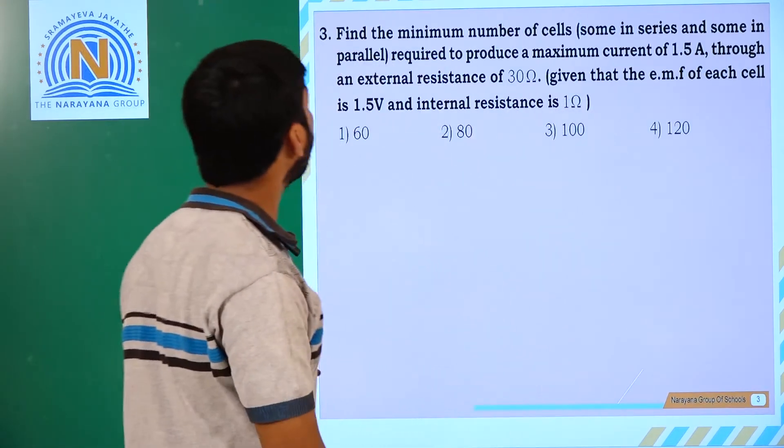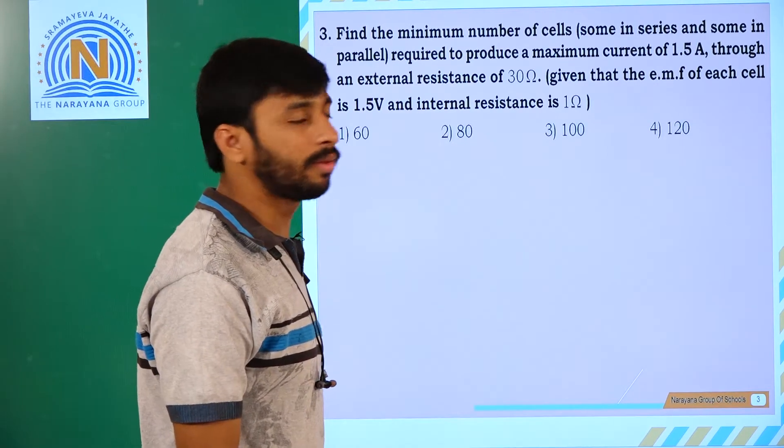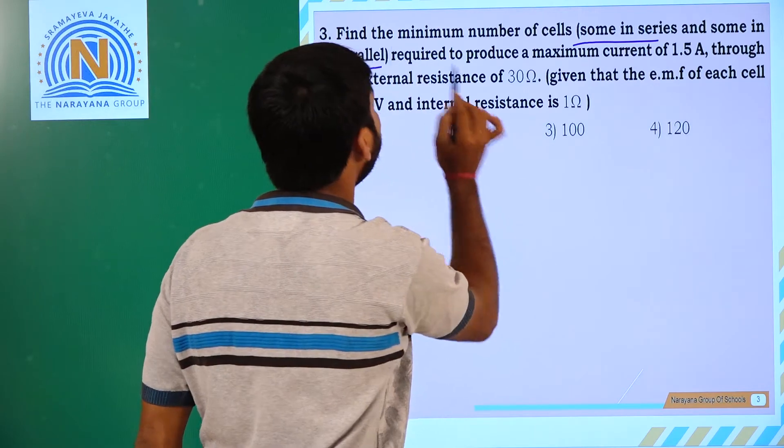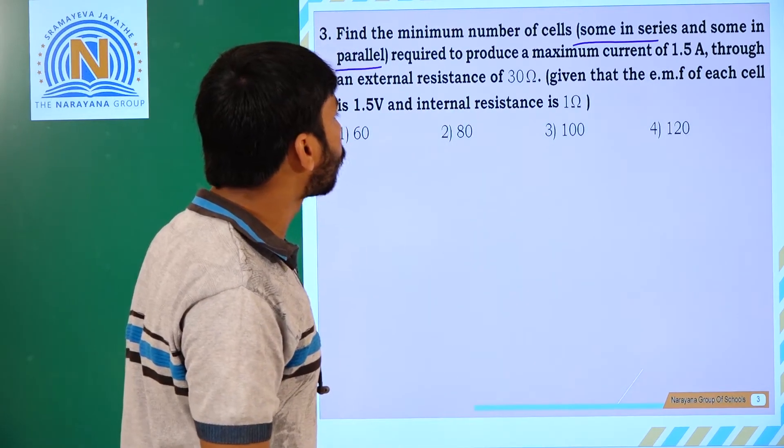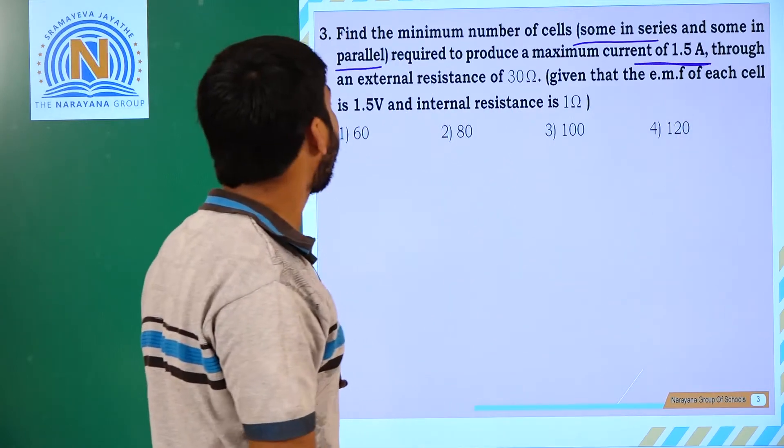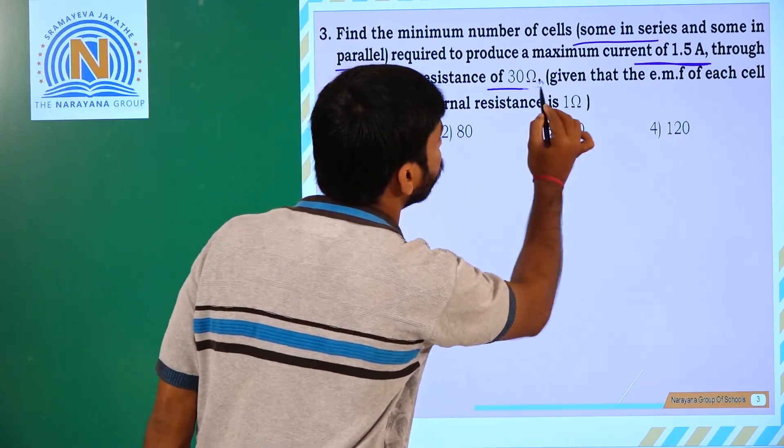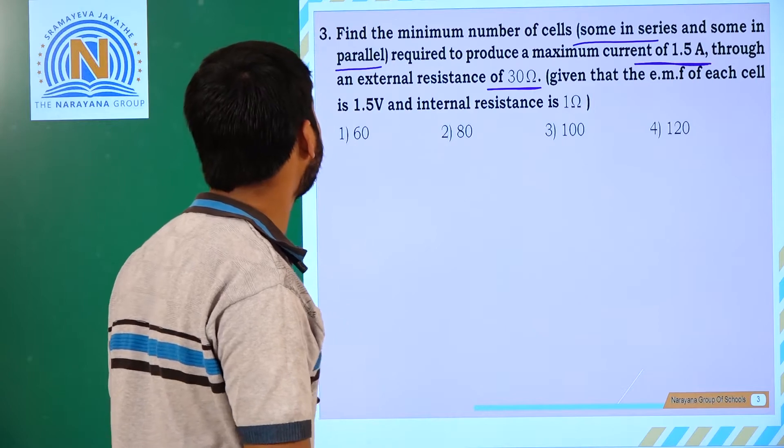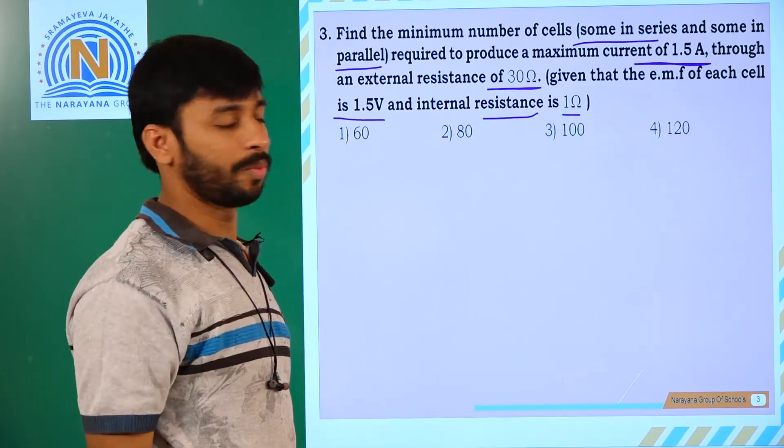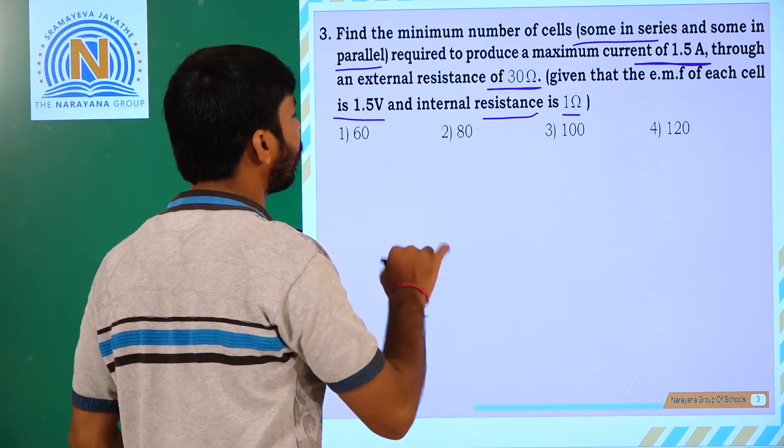Next question: find the minimum number of cells, some in series, some in parallel, required to produce a maximum current of 1.5 A through an external resistance 30 ohms, given that EMF of each cell is 1.5 volts, internal resistance 1 ohm.